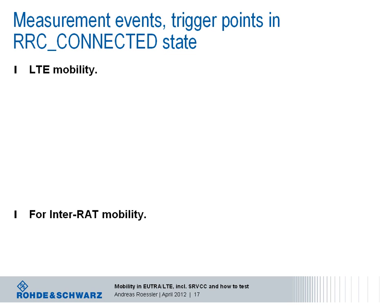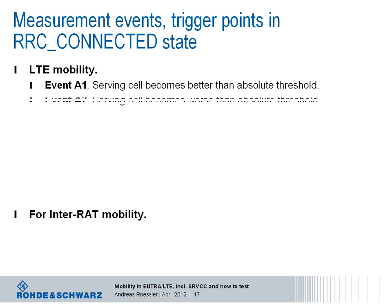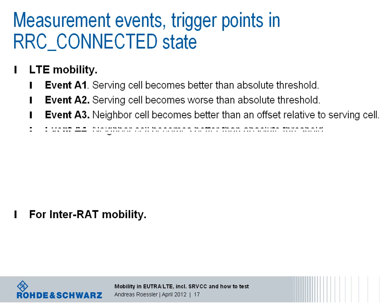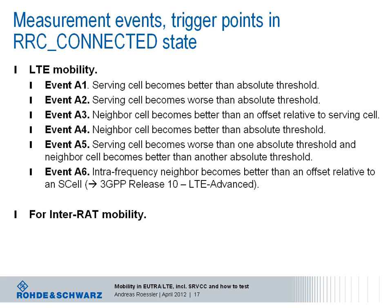But only in connected mode, where the mobility control is with the network, are measurements reported by the terminal. Some measurements are only taken in connected mode — RSRQ is the example, only measured in connected mode, whereas RSRP is measured in both idle and connected mode. The question is when the device sends such a measurement report and what is being reported in terms of quantity. For mobility within LTE, certain events are defined that trigger such a measurement report.